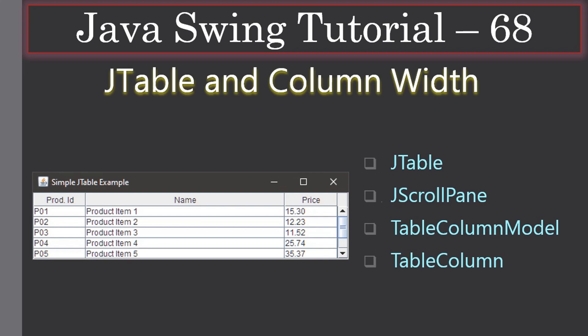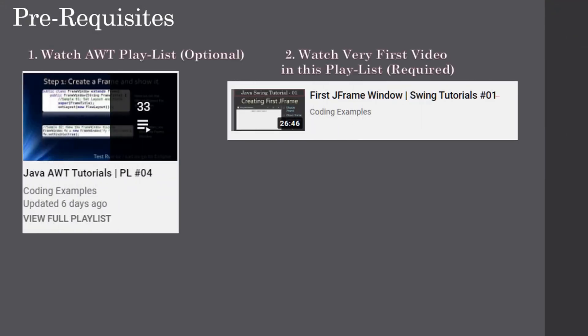Hello friends, welcome to Java Swing tutorial. This will be the final video of the Java Swing tutorial series. Here we are going to see JTable and how to set column width. We have three columns: product ID, name, and price, and the table is showing five rows. You will learn JTable, JScrollPane, TableColumnModel, and TableColumn — all four concepts here.